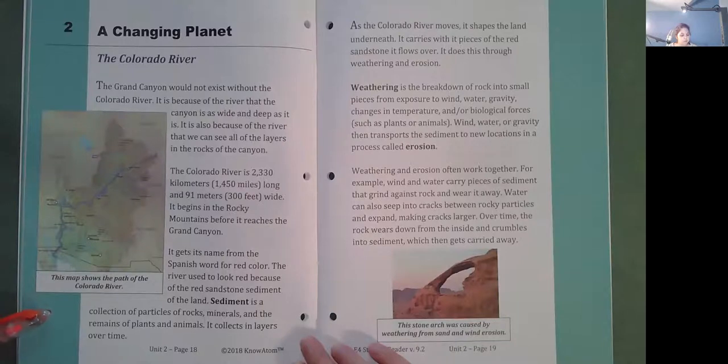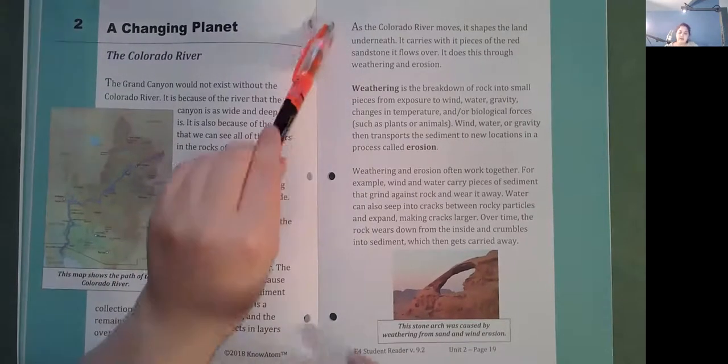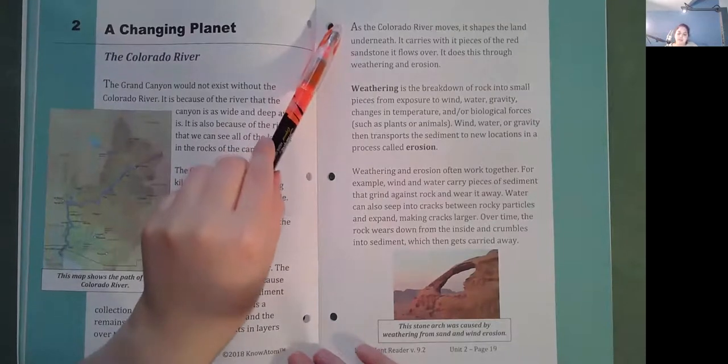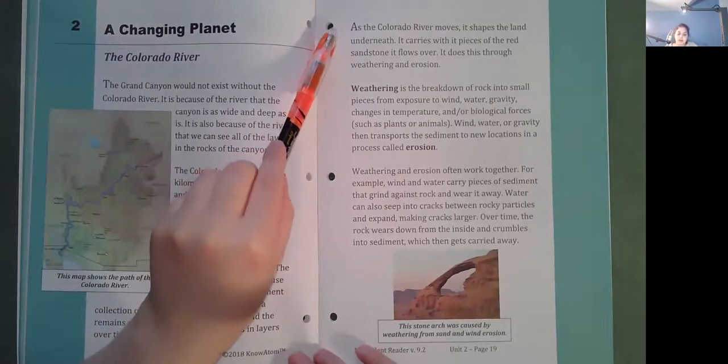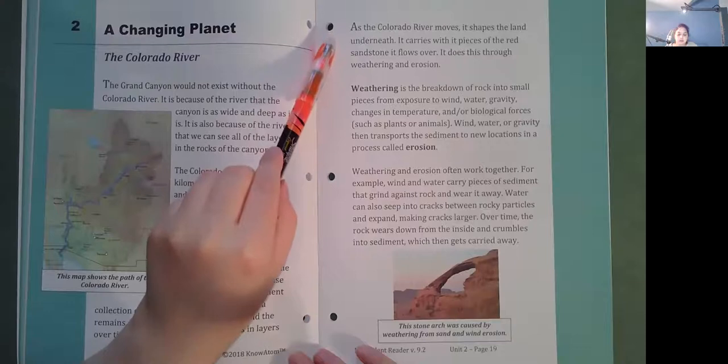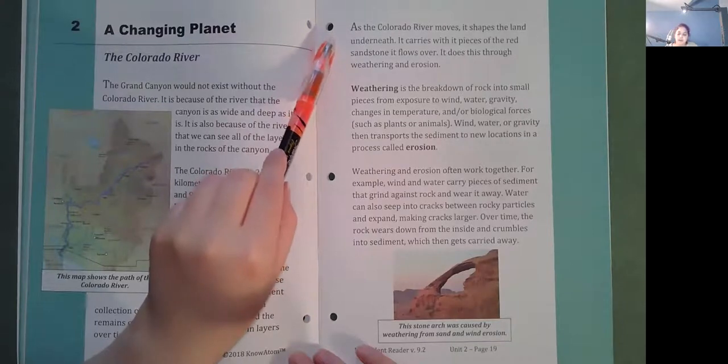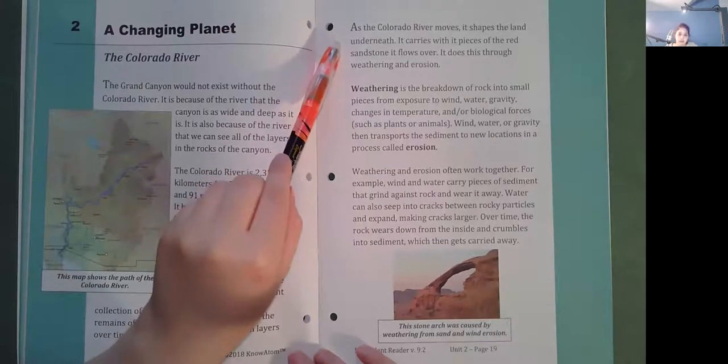Sediment is a collection of particles of rocks, minerals, and the remains of plants and animals. It collects in layers over time. As the Colorado River moves, it shapes the land underneath. It carries with it pieces of the red sandstone it flows over. It does this through weathering and erosion.